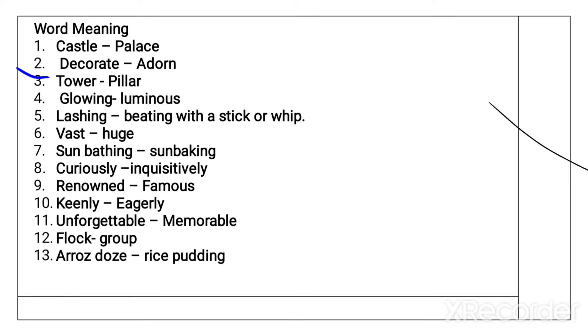Decorate means Adorn. Tower - that is known as Tower. Glowing means Luminous, that is very bright.